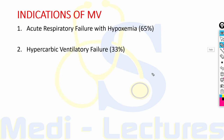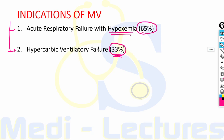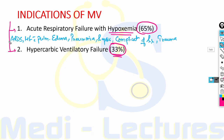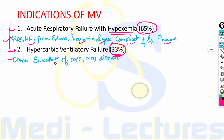The most common indications for mechanical ventilation are acute hypoxemic respiratory failure, responsible for 65% of all indications, and hypercarbic ventilatory failure, responsible for 33%. Causes of hypoxemia include ARDS, heart failure with pulmonary edema, pneumonia, sepsis, and complications of surgery or trauma. Hypercarbic ventilatory failure can occur in coma, exacerbation of COPD, and neuromuscular disorders.